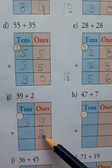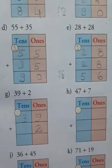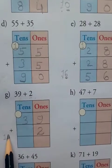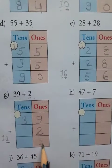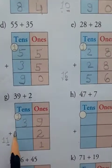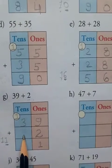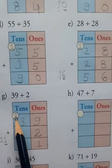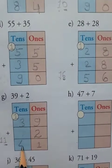Now, you add 9 plus 2: 9, 10, 11. How do you write 11? You write this 1 in the ones place here and carry over this 1 to the tens place. Now here in the tens there is nothing. So 3 plus carry: 3 plus 1 is equal to 4. So you write 4 here. It means 39 plus 2 is equal to 41.